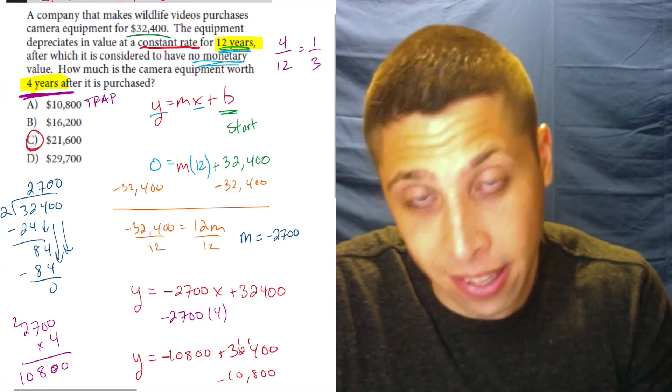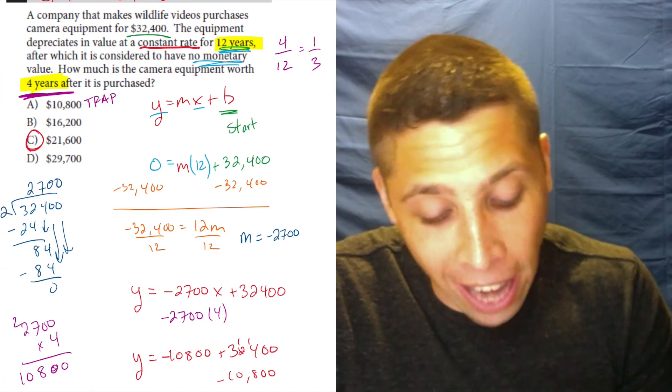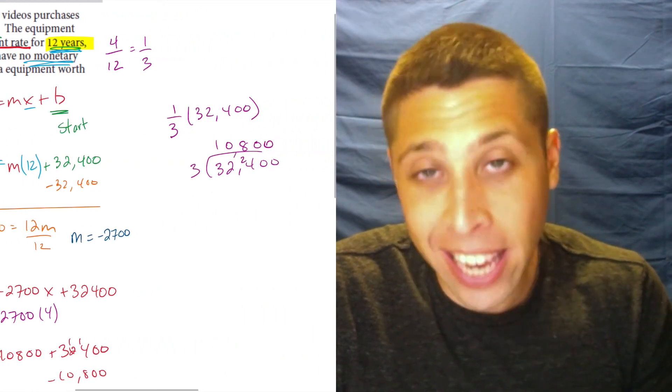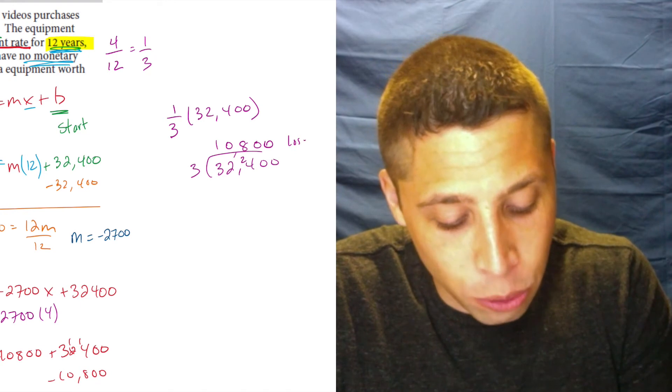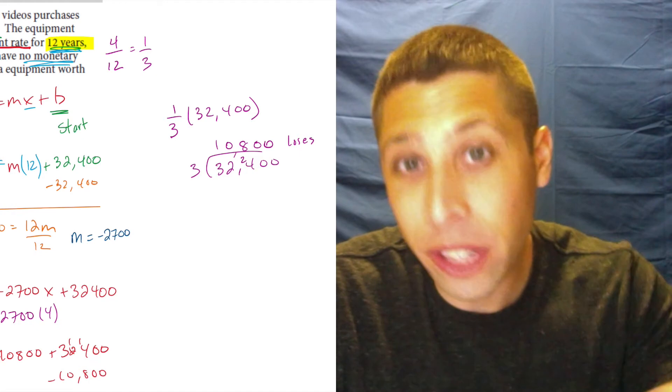So there's that number again, 10,800, which again is a trap answer choice. And this is why you've got to really be careful no matter what way you do it. So that, again, is the amount that it loses after four years.